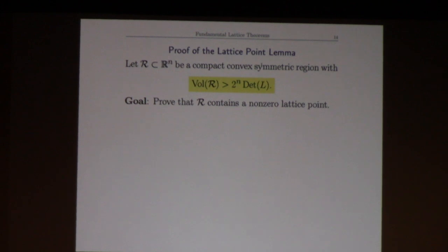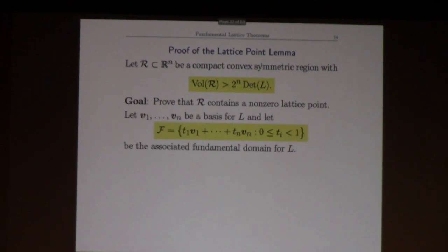So what we're going to do essentially is create two lattice points and show that they're different, and their difference will be the thing we're looking for. We start with a basis for our lattice and the fundamental domain is the parallelepiped that it spans.